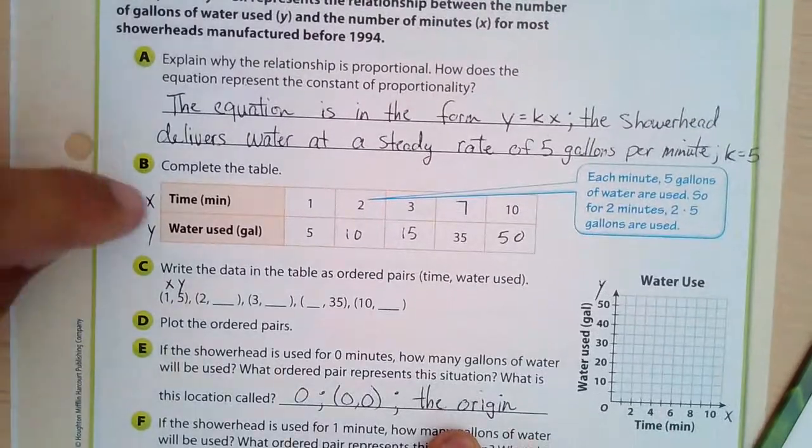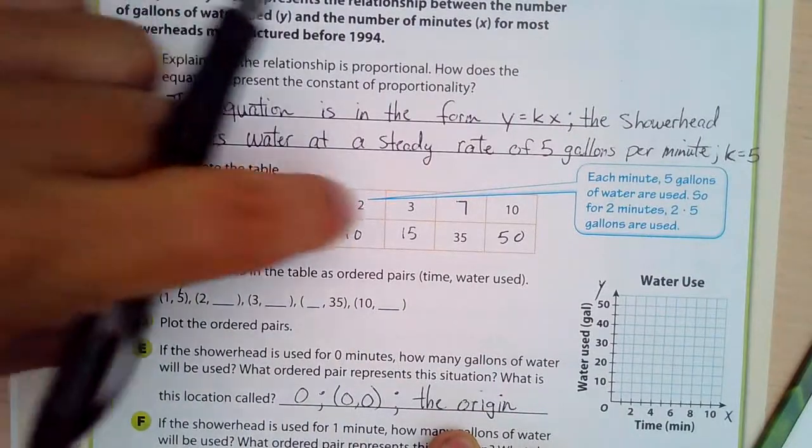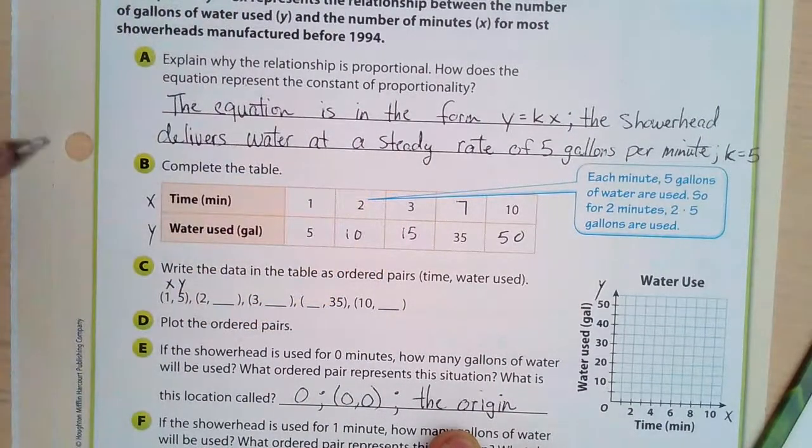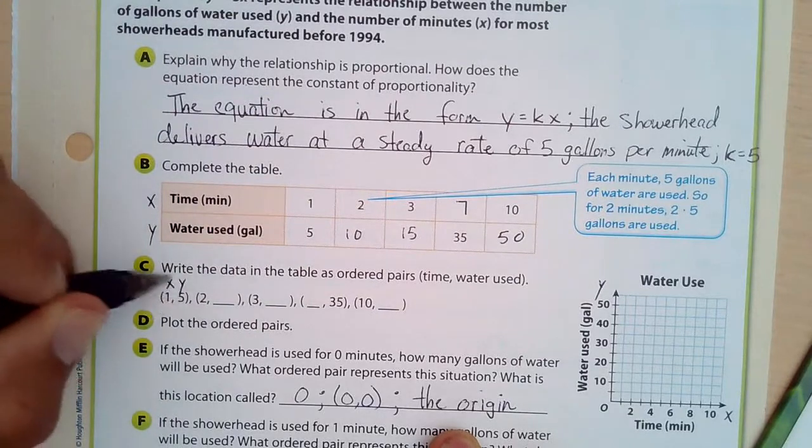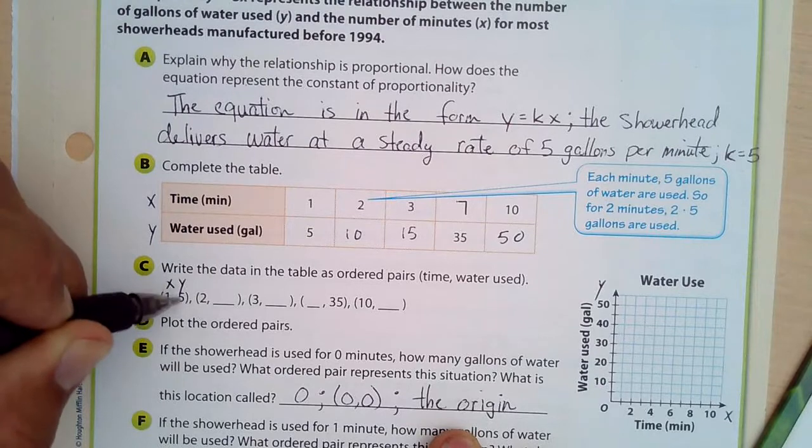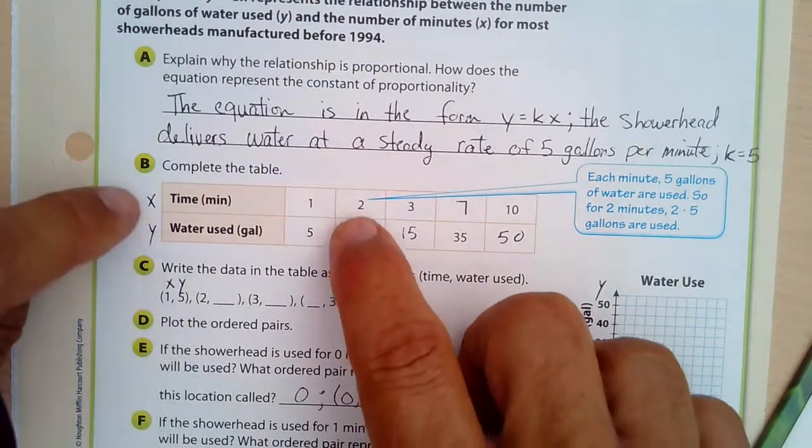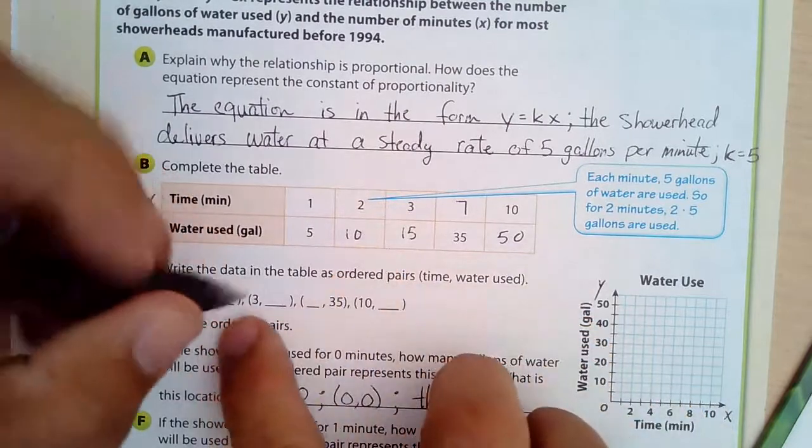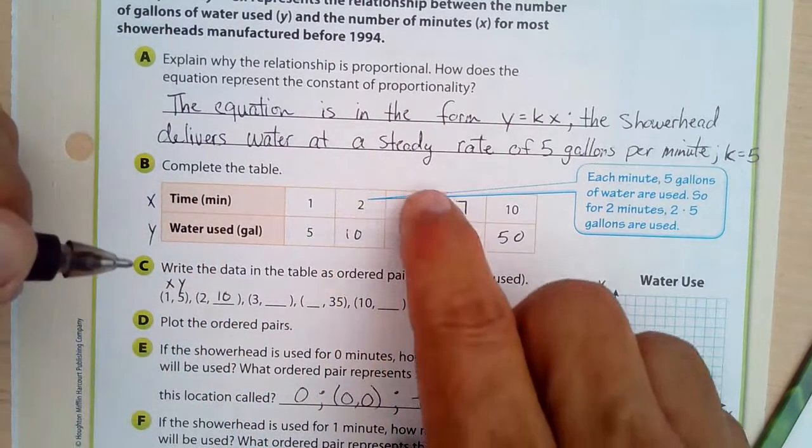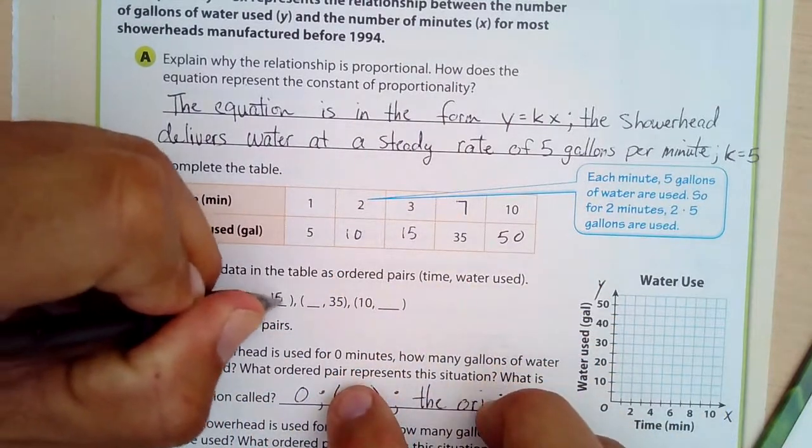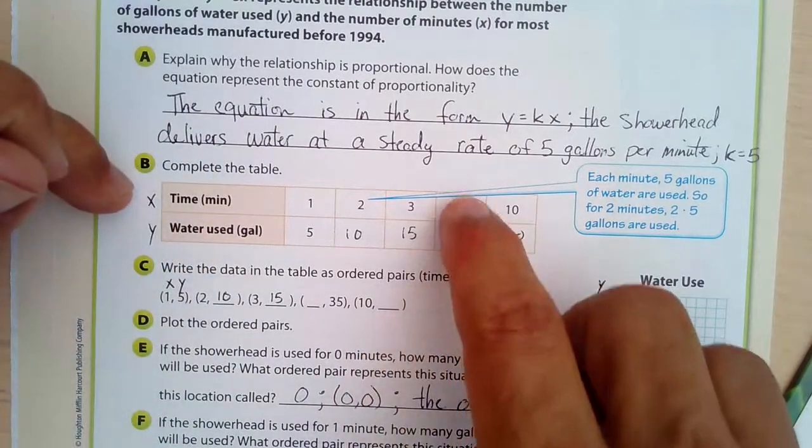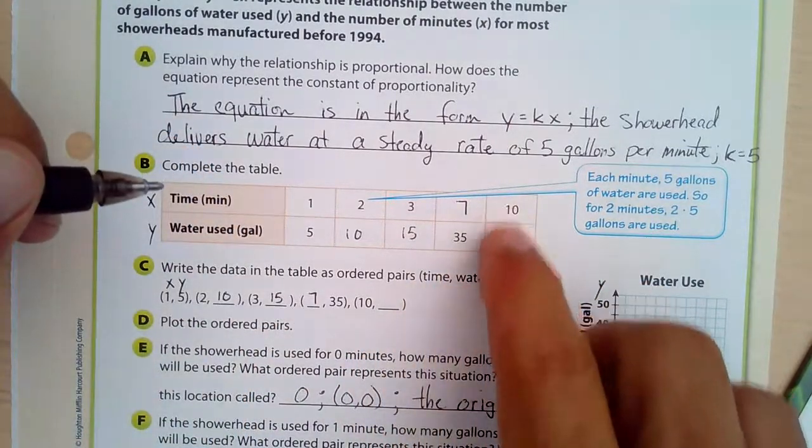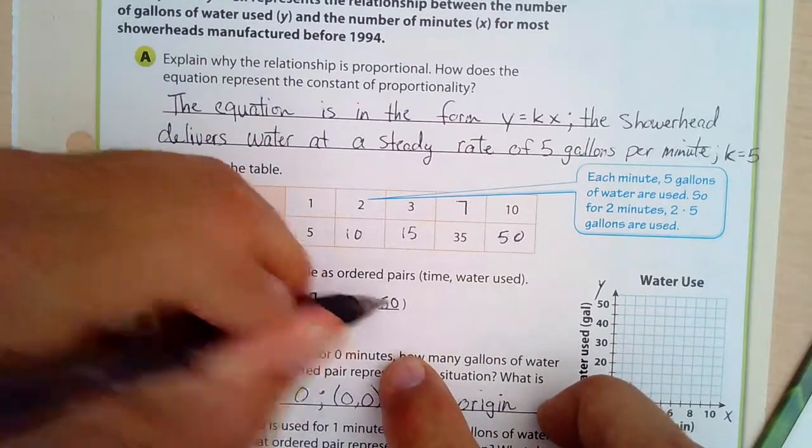Now remember, the first row is the x values, and the second row is the y values in each table. So we have ordered pairs. In these ordered pairs, the first number is the x number, and the second number is the y number. So we have 1, 5; 2, 10; 3, 15; 7, 35; and 10, 50.